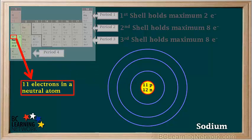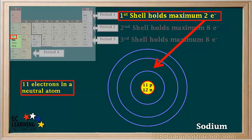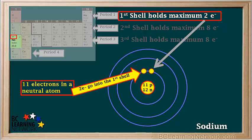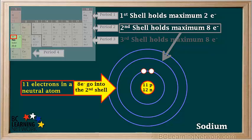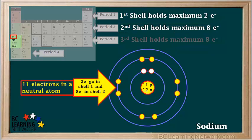A neutral sodium atom has 11 electrons. The first shell holds 2 electrons, so we'll add the first 2 electrons to the first shell. The second shell holds a maximum of 8 electrons, so we can add 8 electrons to the second shell, like this. So now we have 2 electrons in the first shell and 8 electrons in the second shell, for a total of 10 electrons added.